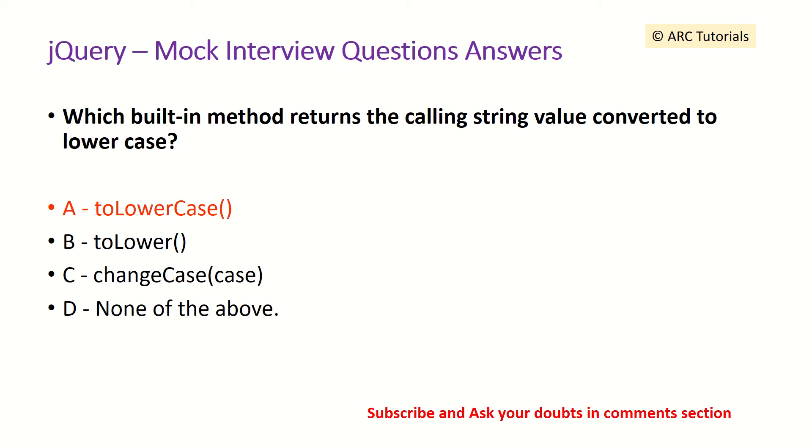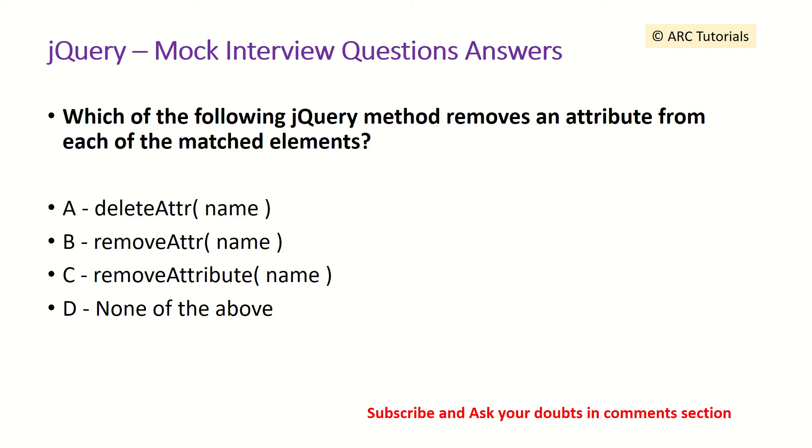Which of the following jQuery method removes an attribute from each of the matched elements? Here we are trying to remove an attribute wherever it matches the elements. Your options are delete attribute, remove attribute, and none of the above. So your answer is removeAttr followed by the name of the attribute that you want to get removed.